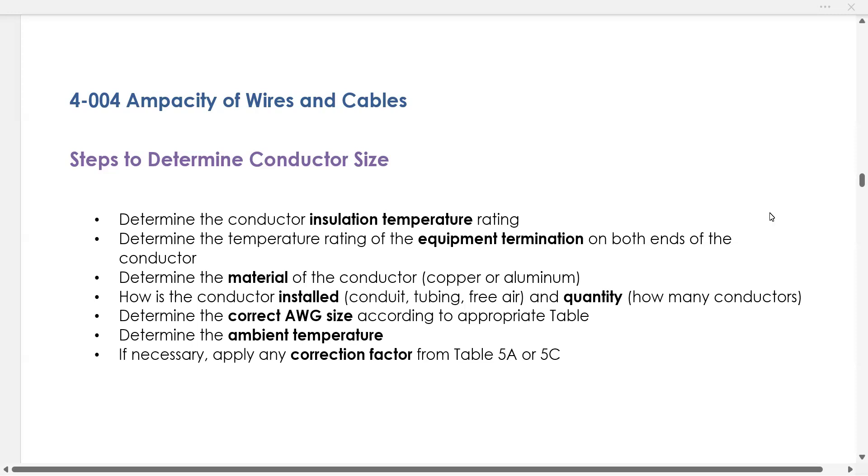So first, you're going to determine the insulation temperature rating. So you will know what type of insulation you need to use for the job, and there is a certain temperature that is associated with that rating. Then you're going to determine the temperature rating of the equipment termination, the terminating point on the equipment at both ends of that conductor. Then you're going to determine which material of the conductor you have, and typically you will know whether you're working with copper or whether you're working with aluminum.